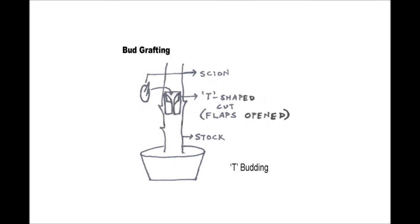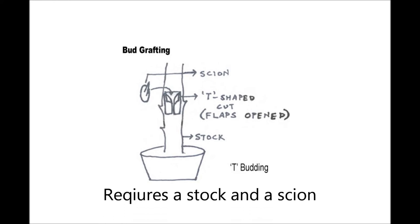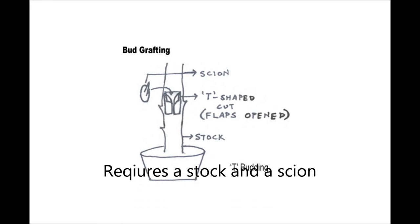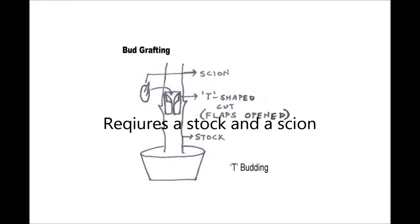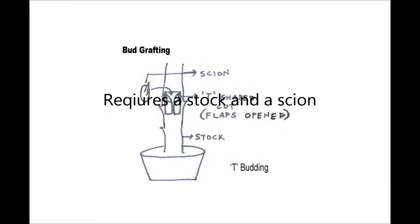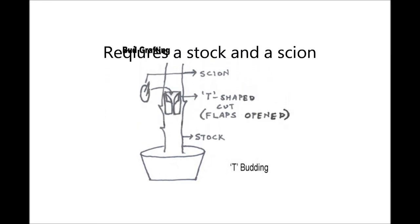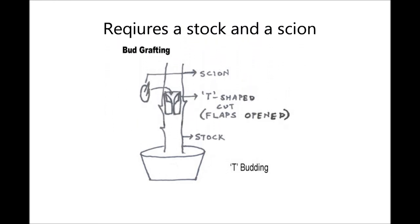The final and most widely used method is grafting, mainly the T-budding technique, where you need a stock and a scion. A T-shaped cut is made in the stock and the floral bud scion is inserted into it.